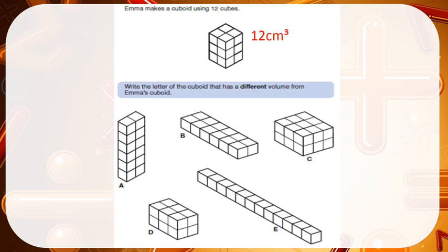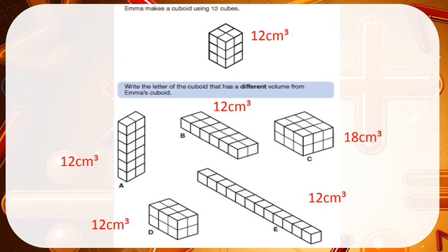The next question is very similar: Emma makes a cuboid using 12 cubes, so the volume of that shape is 12cm cubed. We need to write the letter of the cuboid that has a different volume to Emma's cuboid. I'll repeat the same method — counting all of the cubes that make up each shape. Remember, for shapes like D it's slightly harder because you can't see all of the cubes, but you can use the top and the side to help with multiplication. C is the odd one out because it is the one with a different volume to the 12cm cubed shape.